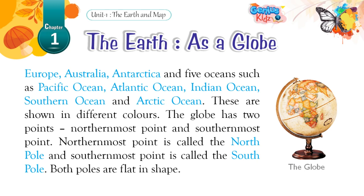The globe has two points — the northernmost point and the southernmost point. The northernmost point is called the North Pole and the southernmost point is called the South Pole. Both poles are flat in shape.